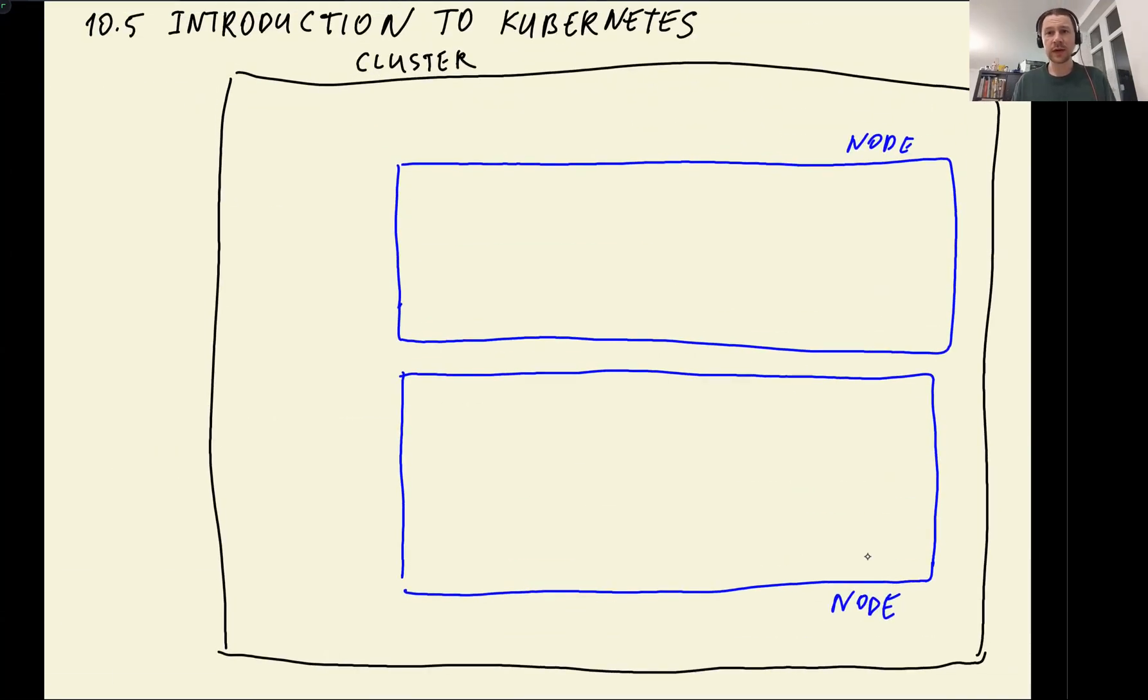And then on nodes we have pods. This is one pod. Then we have another pod. In Kubernetes a pod is a container that runs a specific image with specific parameters. Each node can have multiple containers, multiple nodes.